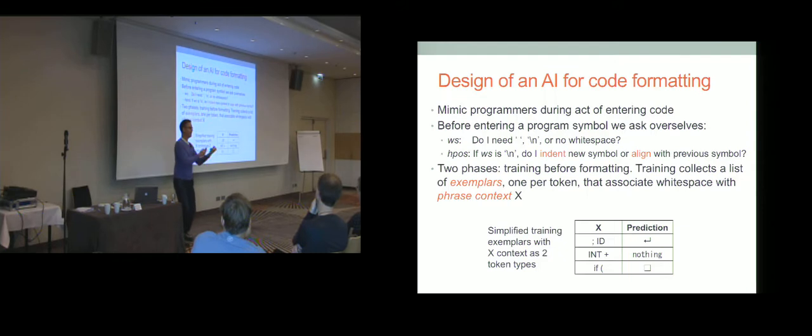So here is a ridiculously simplified version of a few exemplars you might see. After a semicolon, you might have an example where in between a semicolon and an identifier, you'll see a new line. After a 99, followed by a plus, in between there, you might see nothing. After the if, but before a left parenthesis, you might see a space.